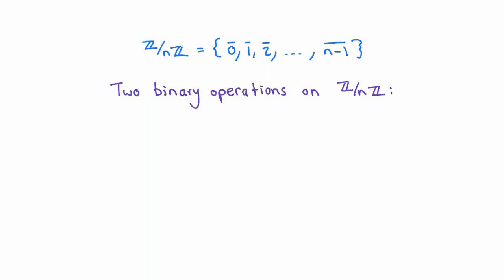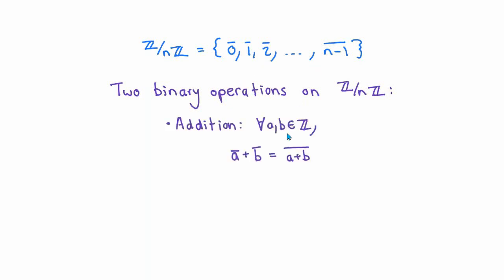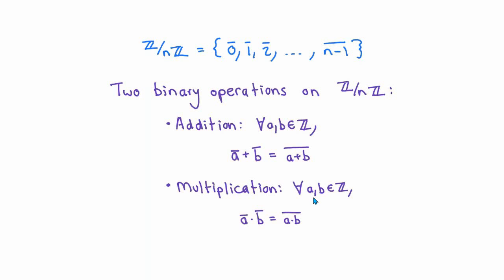The first thing we want to do is to see if we can turn this collection of equivalence classes into a group. We'll introduce two binary operations on Z mod nZ. The first is addition: for any integers a and b, the sum of the equivalence classes determined by a and b is defined to be the equivalence class determined by a plus b. Similarly, we define multiplication of equivalence classes by multiplying their representatives: the product of ā and b̄ is defined to be ab̄.